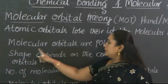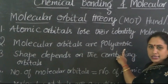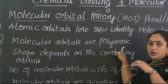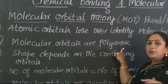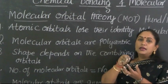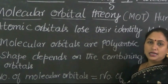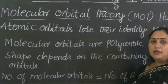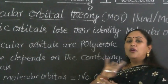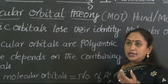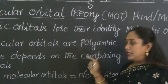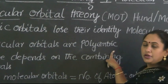So point number 2 to remember is that molecular orbitals are polycentric. Since they are polycentric, the electrons present in the atomic orbitals will now be moving in the molecular orbital. Earlier, when they were atomic orbitals, they had only one center around which they were moving. Now that they have formed the molecular orbital, these electrons would be moving under the influence of all the nuclei — not just one nucleus, but all the nuclei present in the molecule.